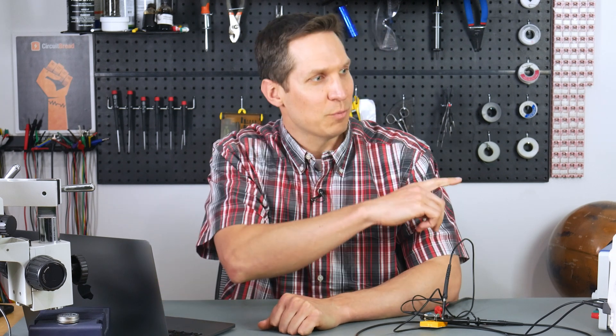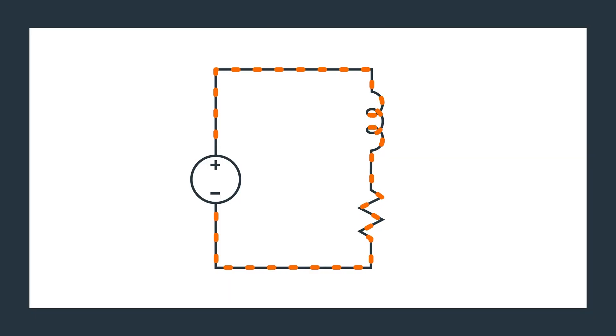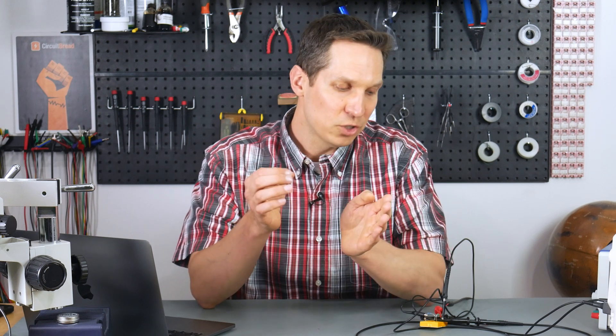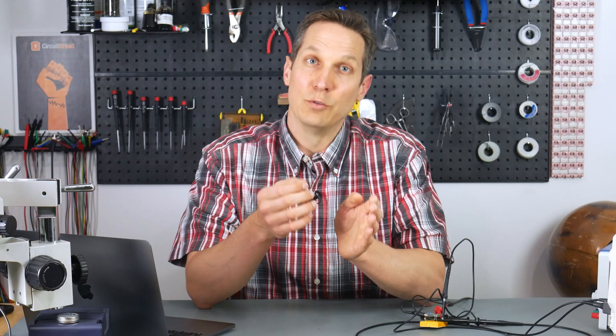Okay, so with that, let's turn on my oscilloscope and my waveform generator and we'll show this in action. I have an inductor and a resistor in series. I'm going to start out with a 1000 hertz signal across the inductor and the resistor, and I will measure the voltage across the resistor.